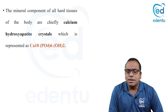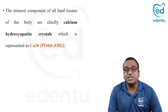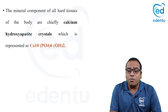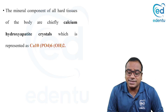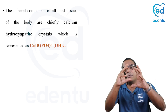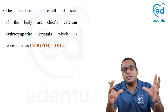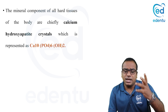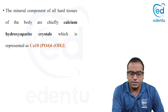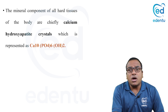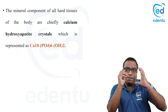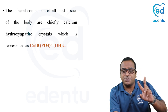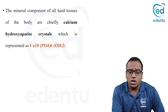This biological apatite crystal has the shape of a stubby rhombic prism, which varies in size and is measured in angstrom units. Now, when mineralization happens, there are two types of nucleation: homogeneous nucleation and heterogeneous nucleation.